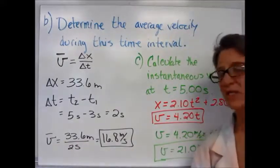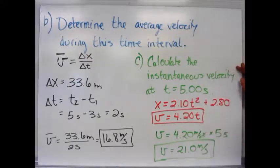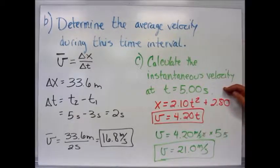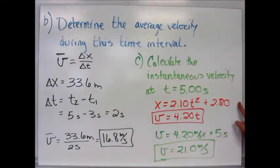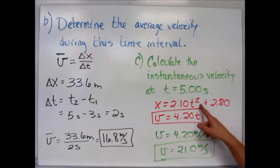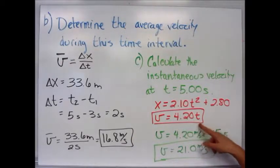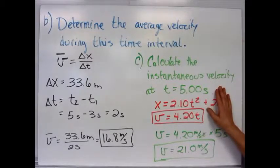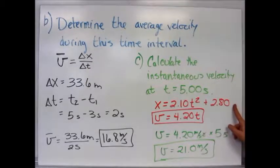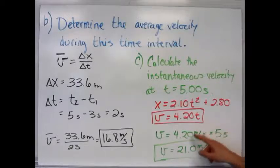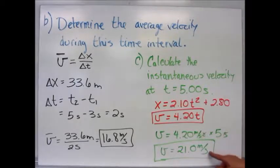To use your new skill, we're going to calculate the instantaneous velocity at t equals 5 seconds. There's your original equation, and we take the first derivative. The first derivative is 2 times 2.1, gives us 4.2t. The 2.8 goes away because there's no t involved. So our velocity at 5 seconds is 4.2 times 5. Our instantaneous velocity at 5 seconds is 21 meters per second.